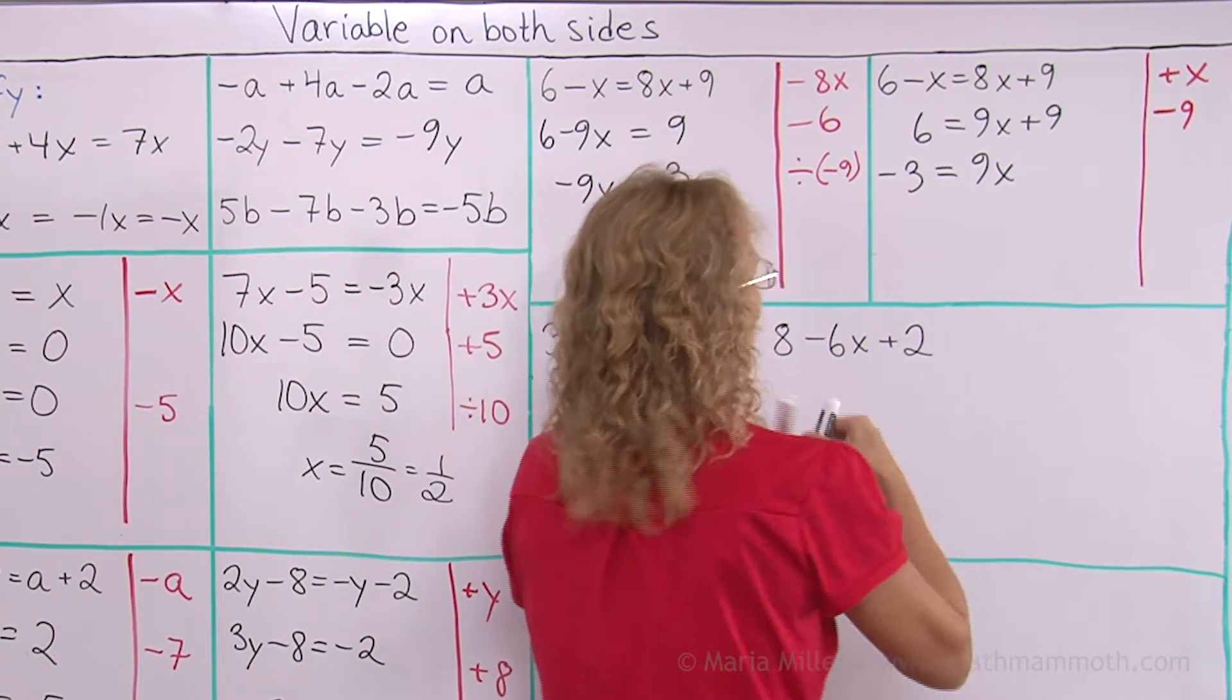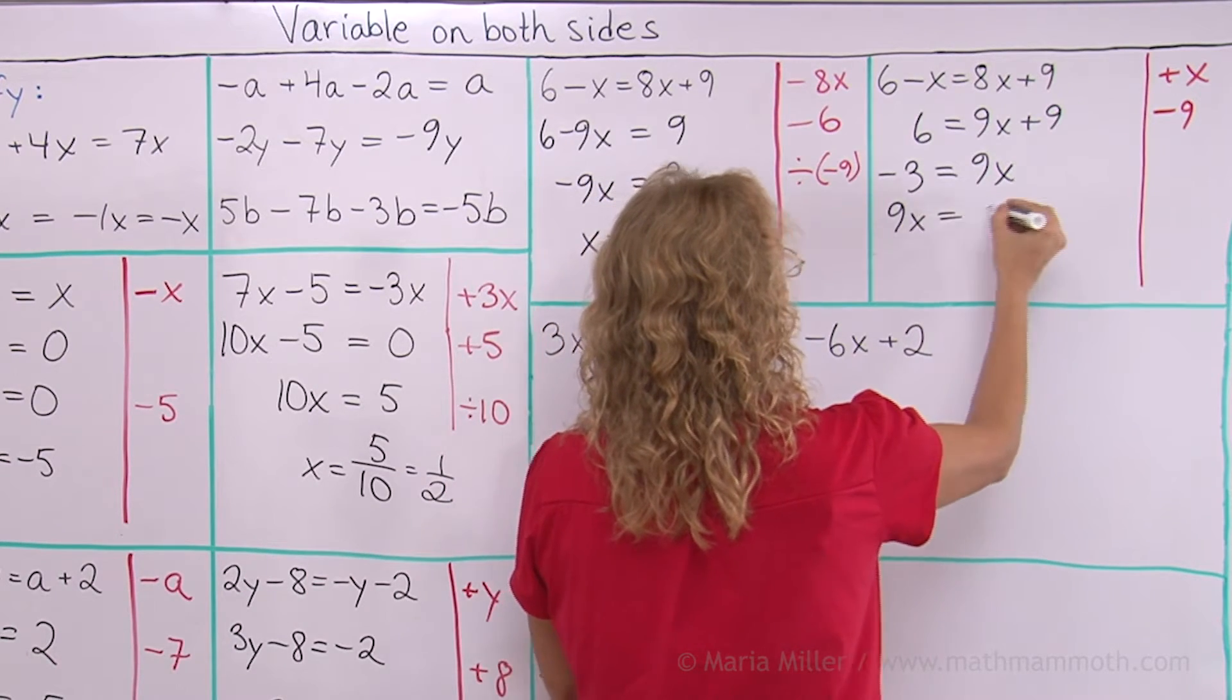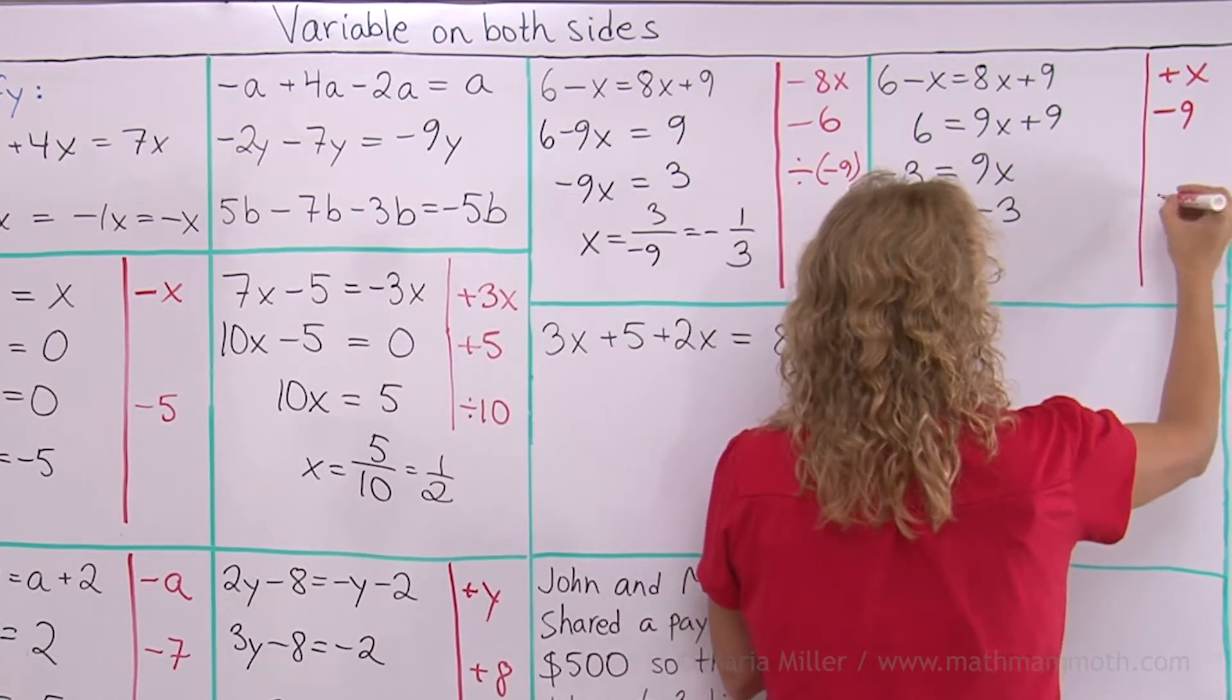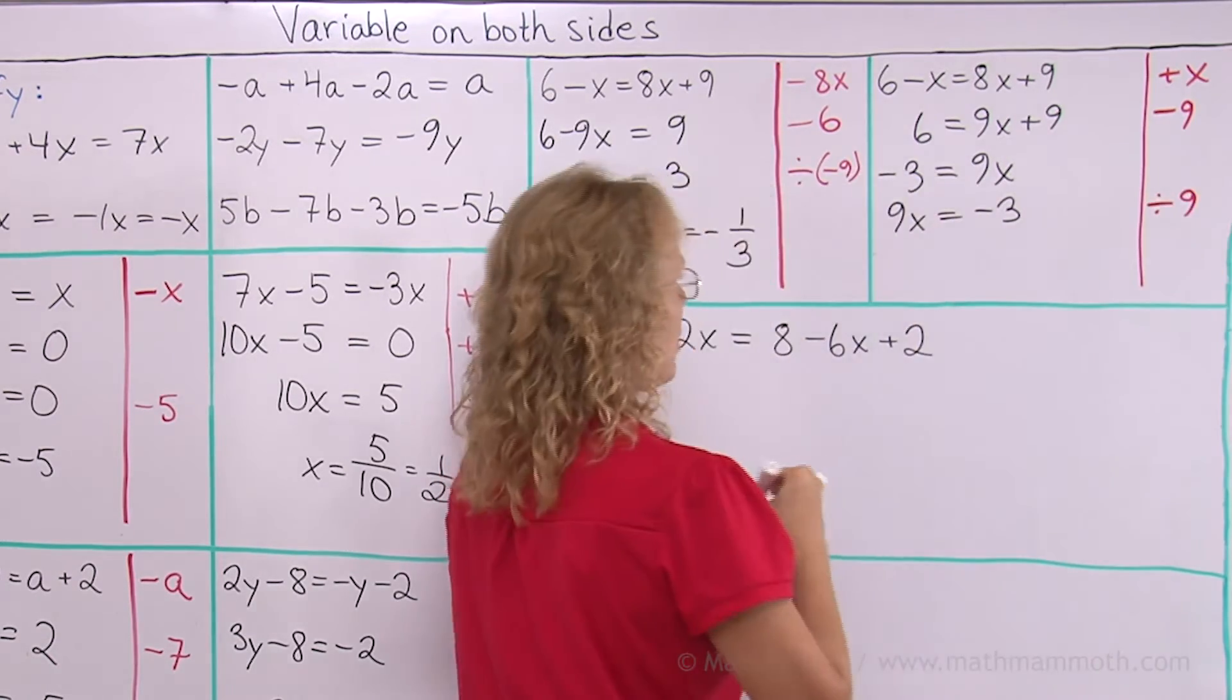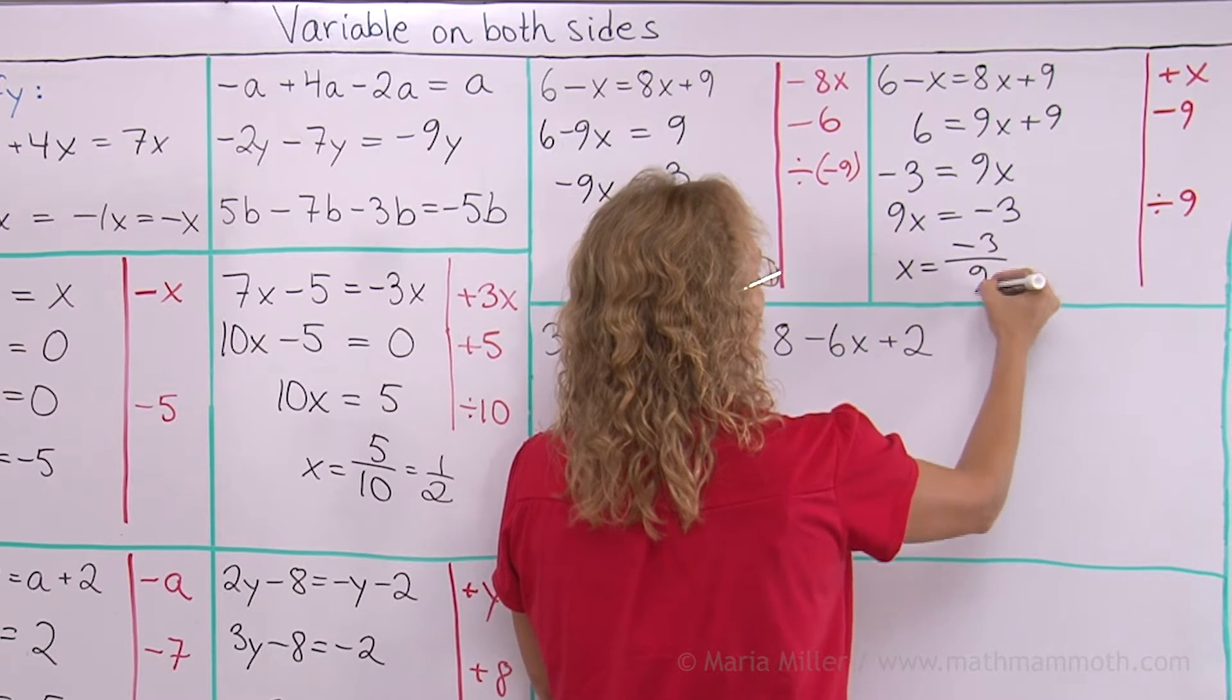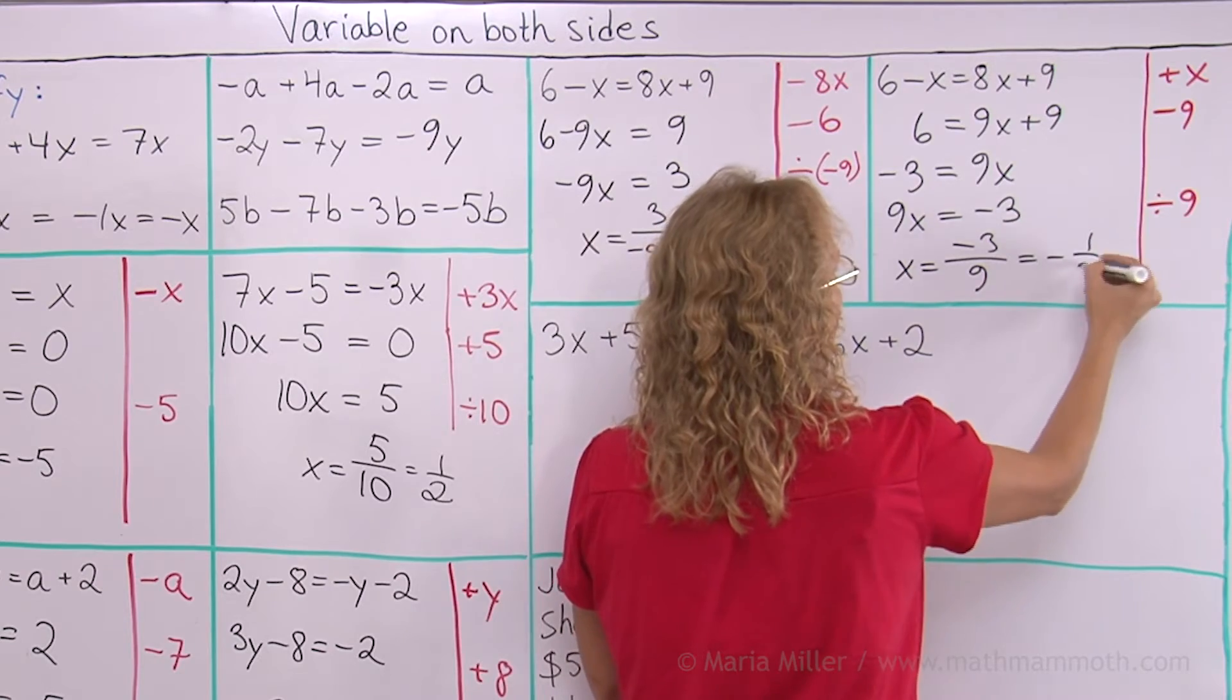And then, let me flip it now, maybe it's easier for you, 9x equals negative 3. And then at this step, divide by 9. Both sides divide by 9, so we get x equals negative 3 over 9, which is of course the same, negative 1 third.